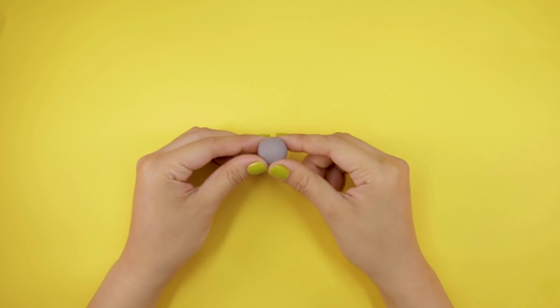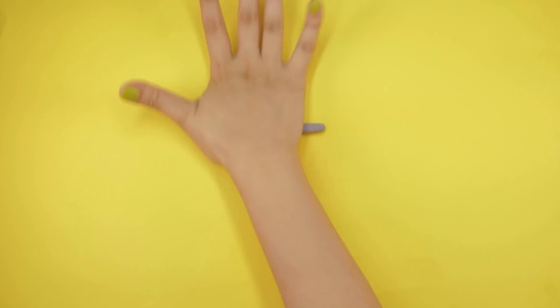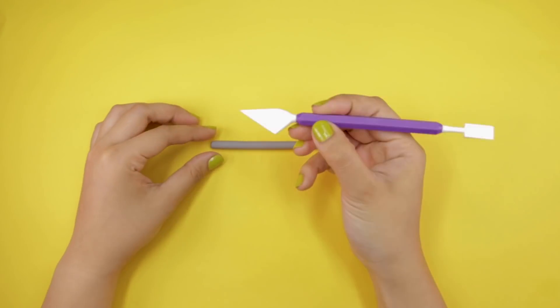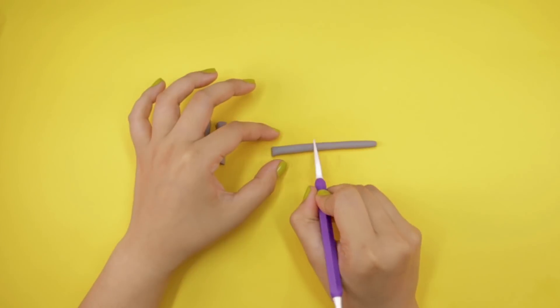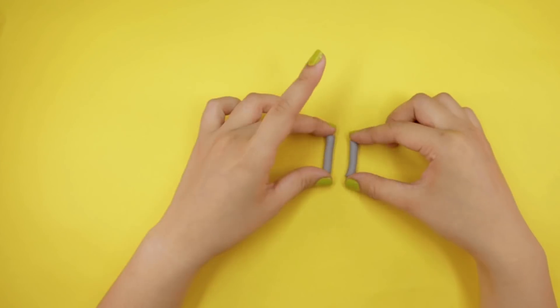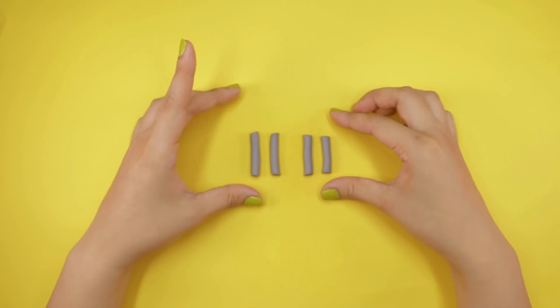Continue the build by getting your gray clay. Roll it into a long slender snake shape. Now, cut into four pieces. Some will be used for the arms, the others will be used for the legs. Wow, I really like the clay that you made!